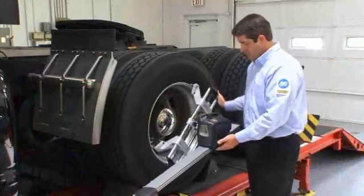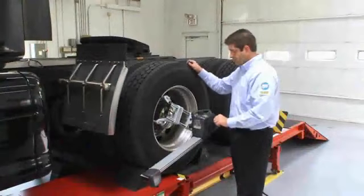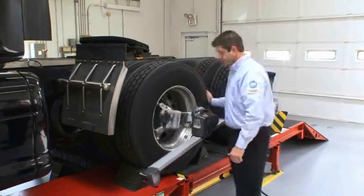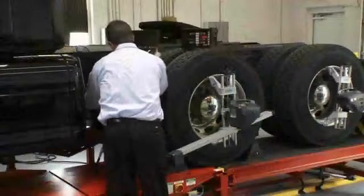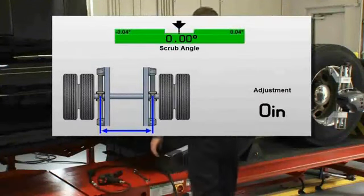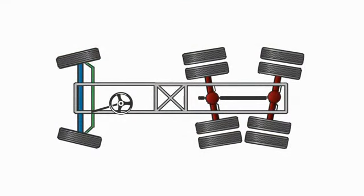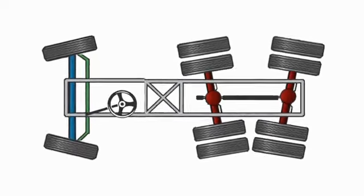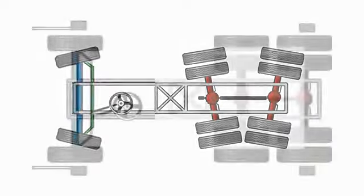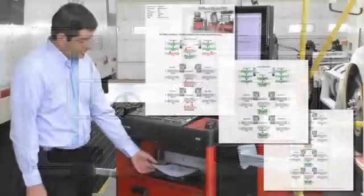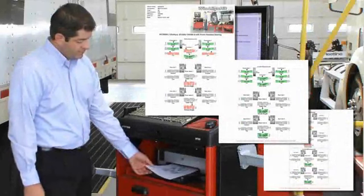To finish the alignment, the front sensors are moved back to the forward drive axle and compensated. The correction is made and the alignment is complete. In summary, the vehicle came in with tandem scrub at the rear and a tow error at the steer axle. Now everything is straight, and you can print a report to prove the work was done correctly.